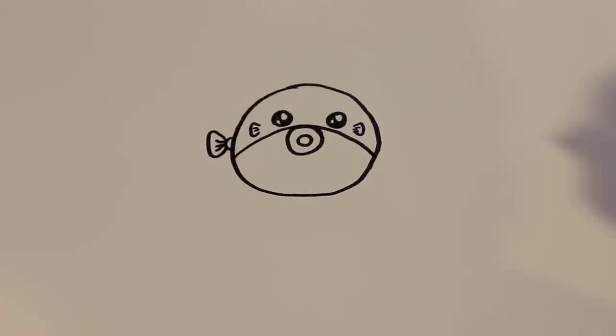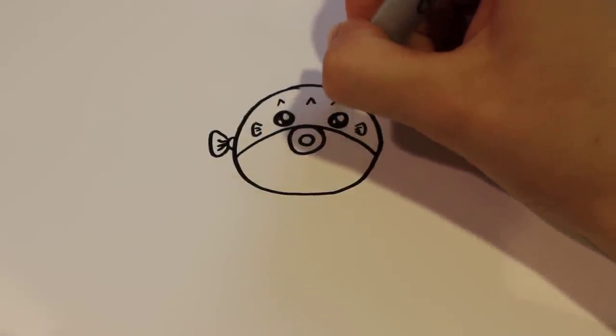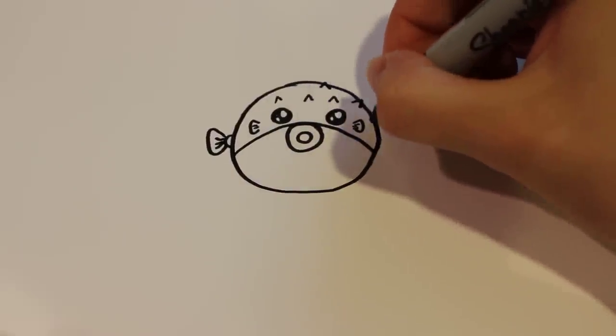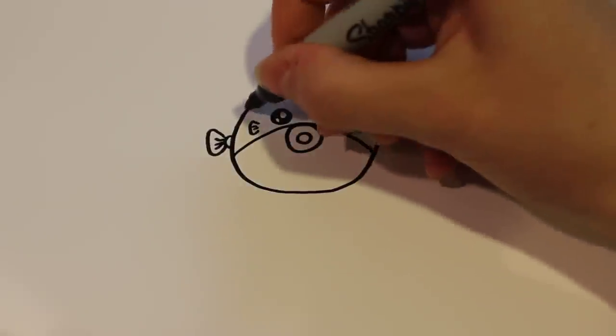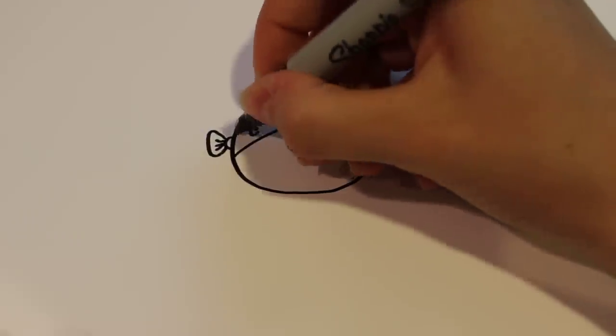And then for the last detail of course is going to be the spikes. So you're going to draw these really kind of pointy little details. And it's okay if they go off of the cartoon because then it shows that he's a spiky fish.